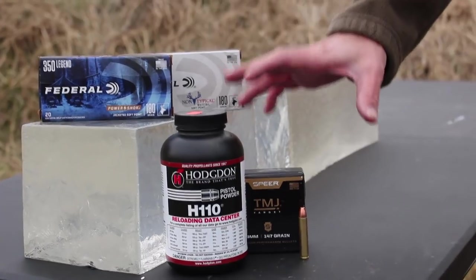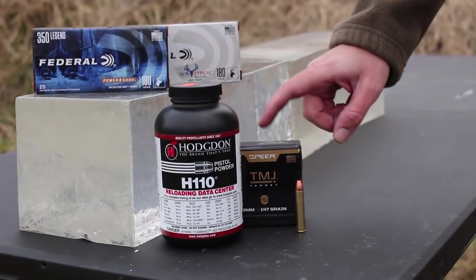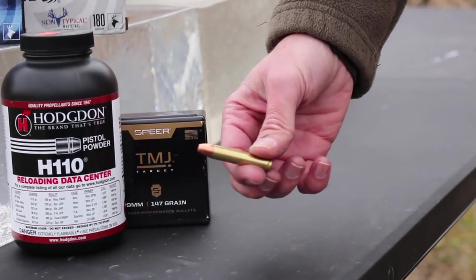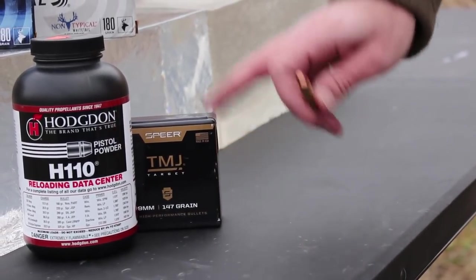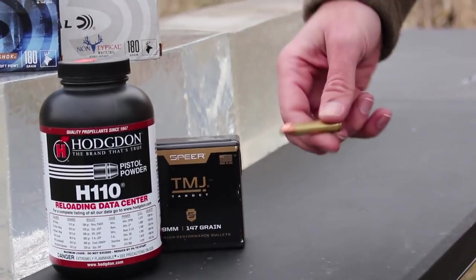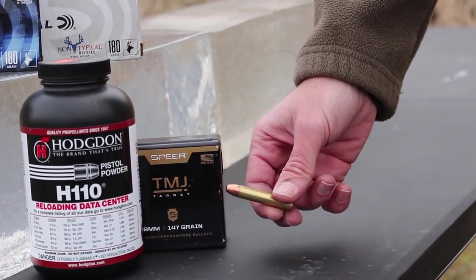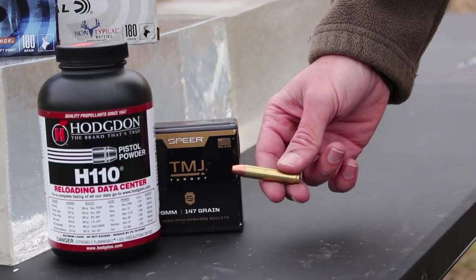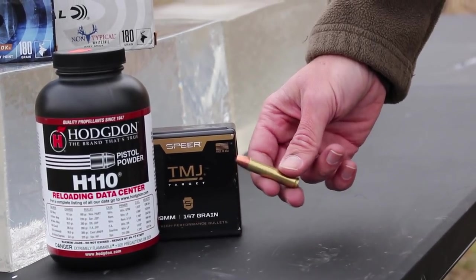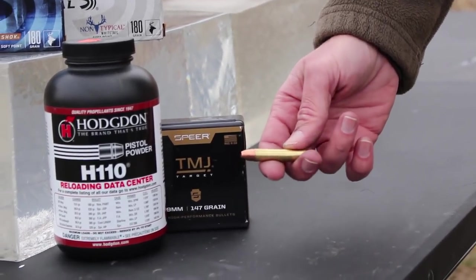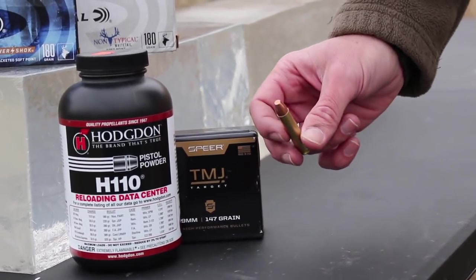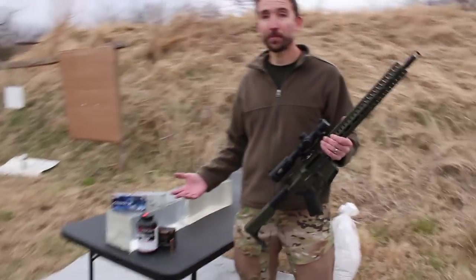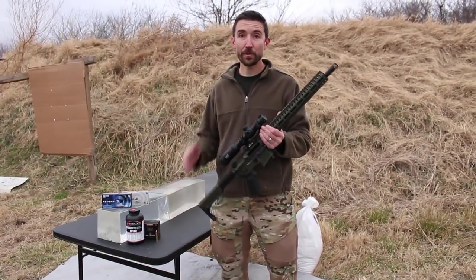Now, one that I definitely expect to cut all the way through the block here is going to be our handloads. These are 147 grain nine millimeter TMJs from Spear. And these are loaded up with Hodgdon H110. And these puppies are moving out a little bit past 2300 feet per second. These aren't grouping extremely well. We're going to get into some better stuff a little bit later. But remember, this is just a nine millimeter pistol bullet that we're firing out of here. And it's doing pretty well. It's doing about one and a half MOA, which really is about what I would expect from 350 legend anyway.